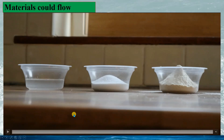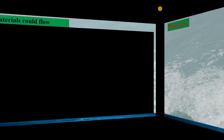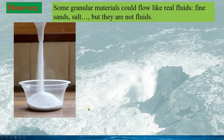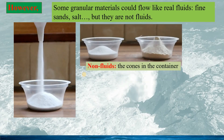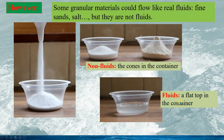If we follow the simple definition of flows, all these three materials flow. However, the simple definition of flows might have difficulties for some special materials. For instance, fine granular materials could flow like real fluids, such as the fine salt through the funnel. But the granular material could flow yet they are not fluids, because the granular material can form a cone shape in the container, while for fluids, the top of the fluid in the container would be flat.